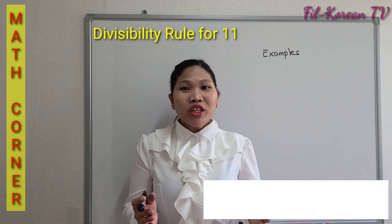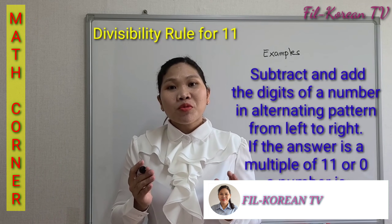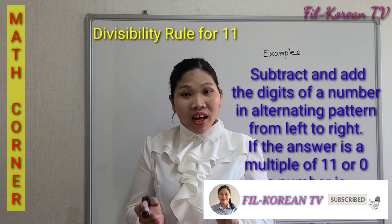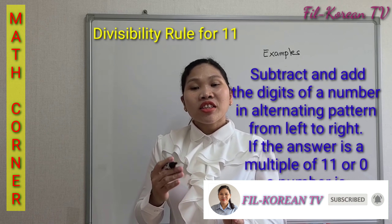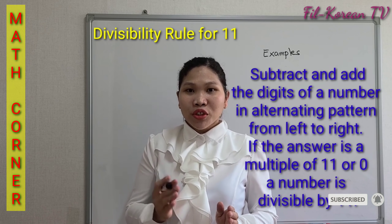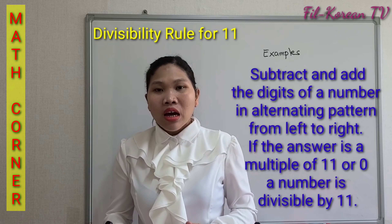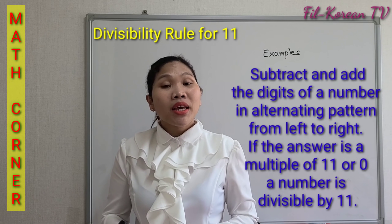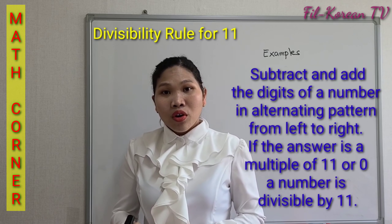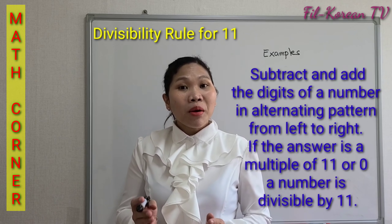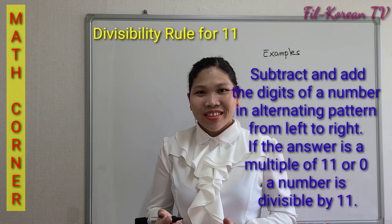For the divisibility rule of 11, subtract and add the digits in alternating pattern from left to right. If the answer is 11 or 0, a number is divisible by 11.